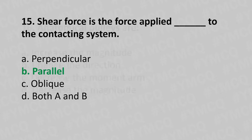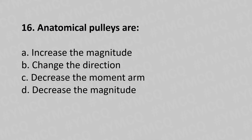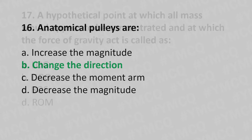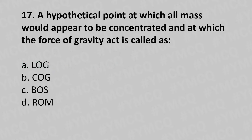Sixteenth question: anatomical pulleys — option A: increase the magnitude, option B: change the direction, option C: decrease the moment arm, option D: decrease the magnitude. The answer is option B: changes the direction.